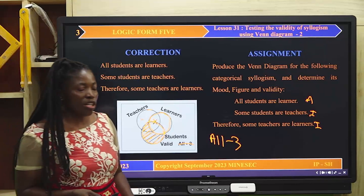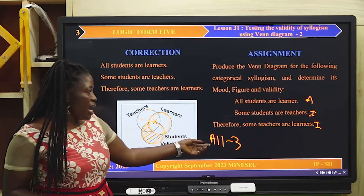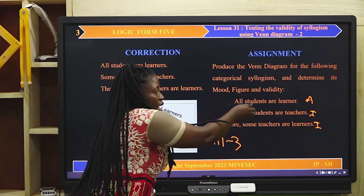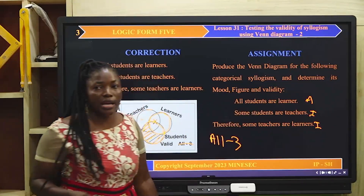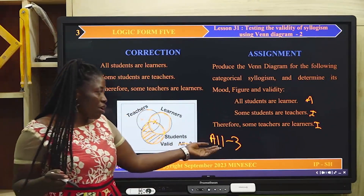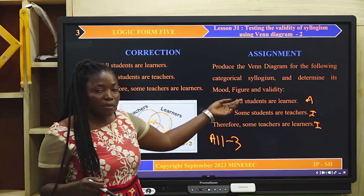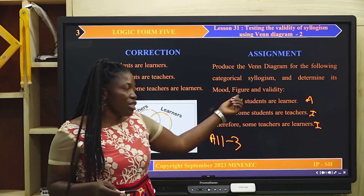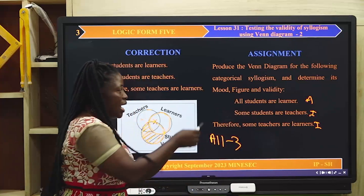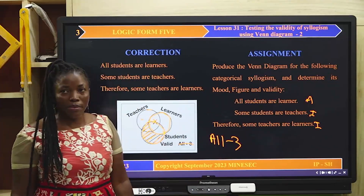Correction of assignment. Take note: A, I, I — Figure 3. Because of the position of the middle term — when we are talking about the third figure, it simply means that the middle term is the subject of the major premise and the subject of the minor premise.